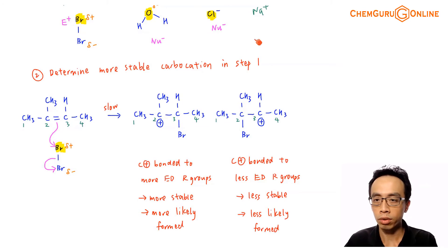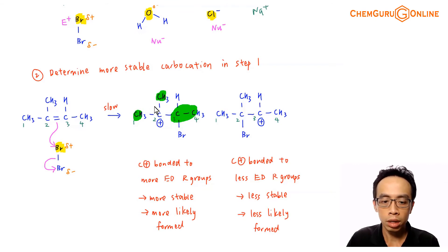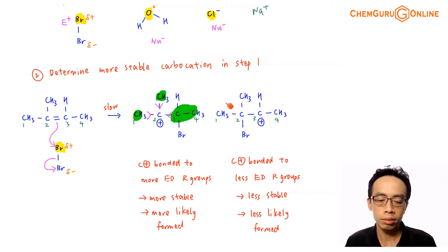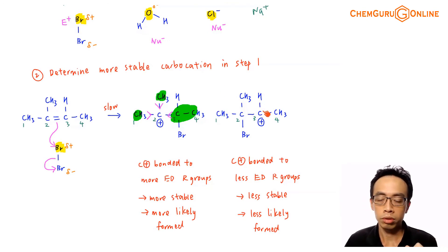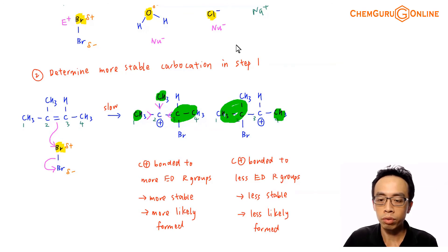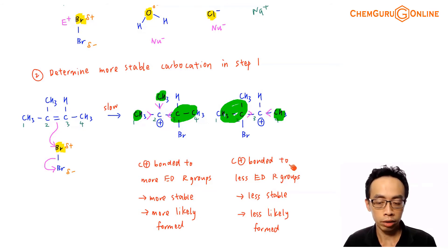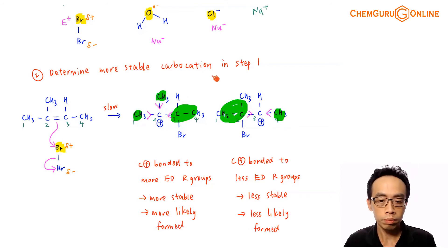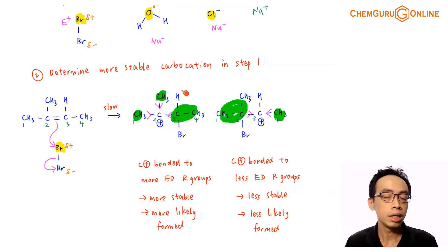The C⁺ on carbon 2 has one, two, three R groups — three R groups pushing electrons to the carbocation, making it more stable. Comparing with the other carbocation: if C⁺ is on carbon 3, there is one R group, and hydrogen is not counted as a donating group, so only two R groups. With fewer electron-donating groups, that carbocation is less stable. Therefore the carbocation on carbon 2 is more stable, more likely to be formed, and will give the major product.